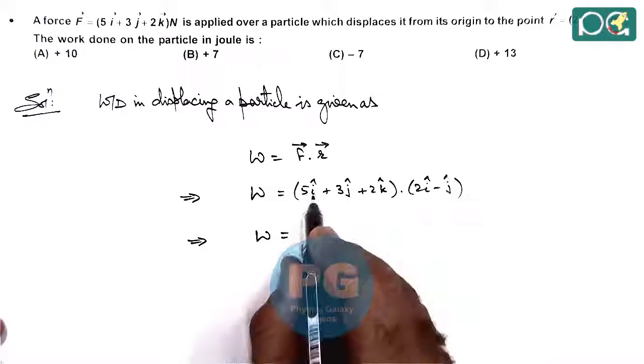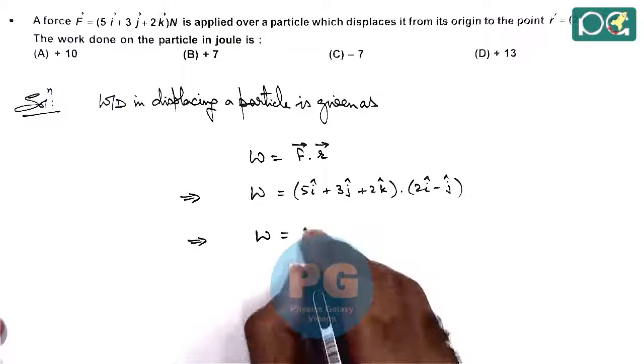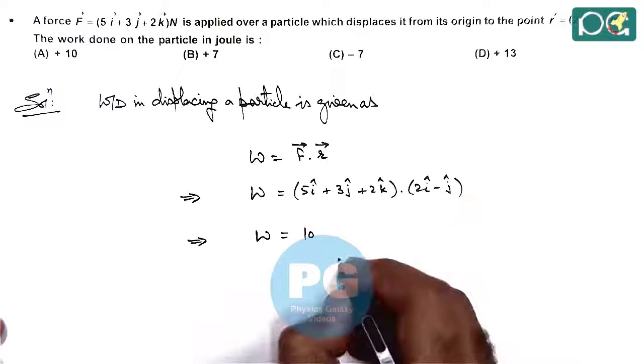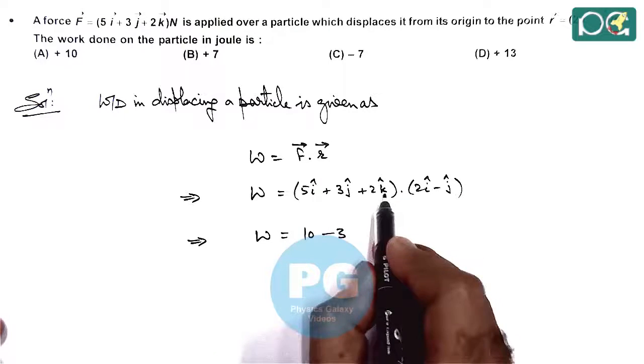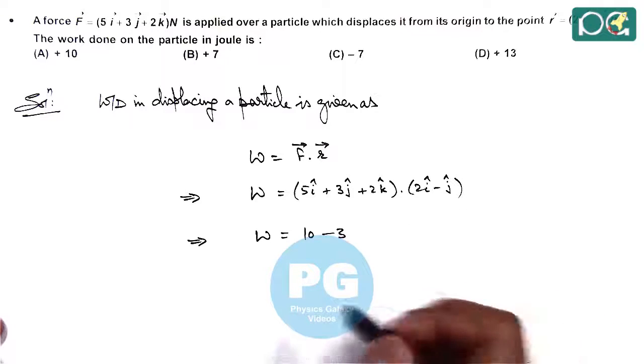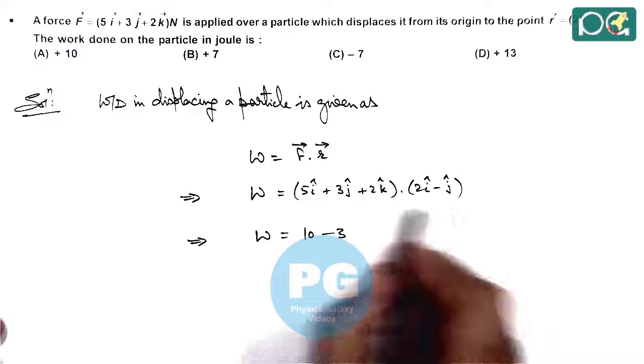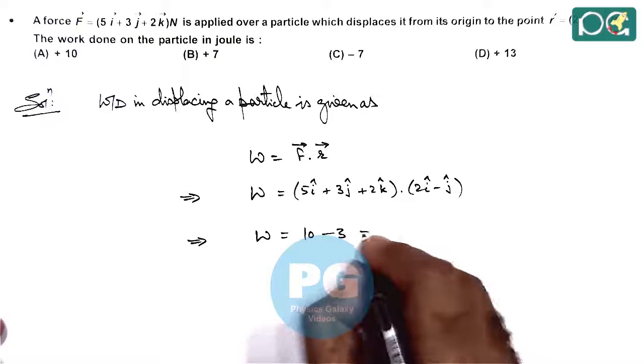i dot i equals 1, so it's 10. 3 times minus 1 is minus 3. The dot product of k cap with the other vectors is 0 because they are perpendicular, so the numerical value is 7 Joules.